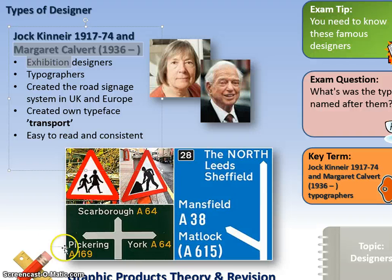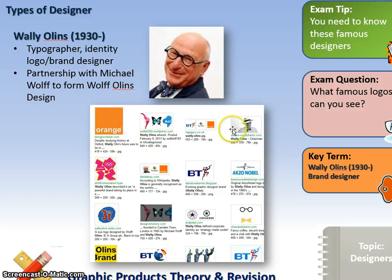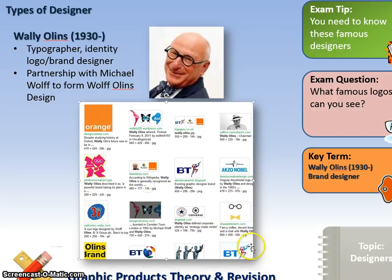Wally Ollins is a typographer and logo/brand designer, sometimes called a corporate identity designer. He is famous for designing many different logos, including the Olympics logo, the Orange logo, BT, Converse, and P&O Ferries.